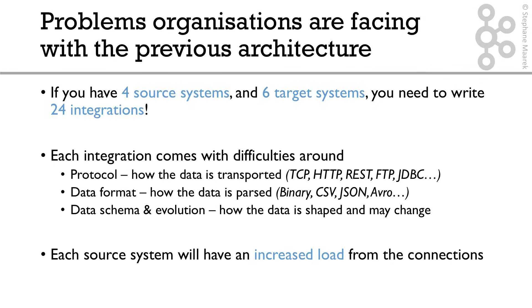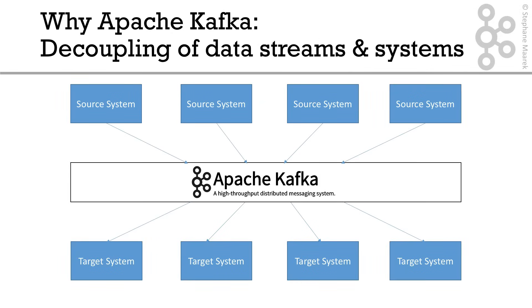So how do we solve this? Well, this is where Apache Kafka comes in. Apache Kafka allows you to decouple your data streams and your systems. So now, your source systems will have their data end up in Apache Kafka, while your target systems will source their data straight from Apache Kafka.